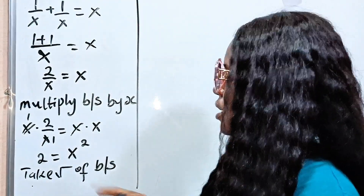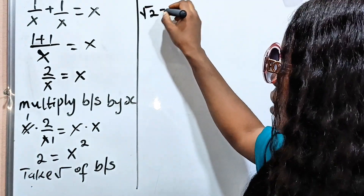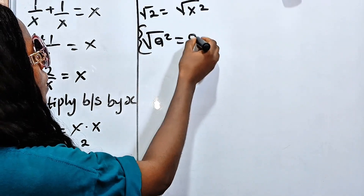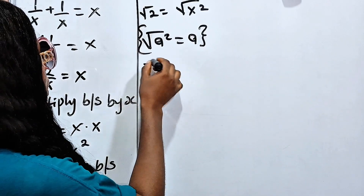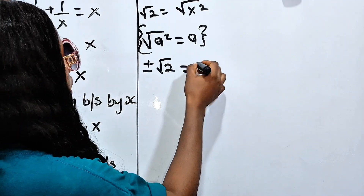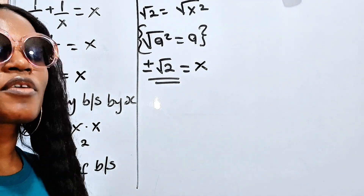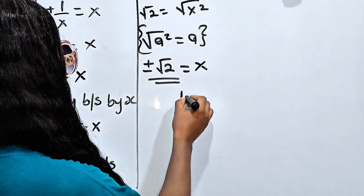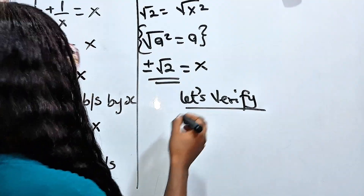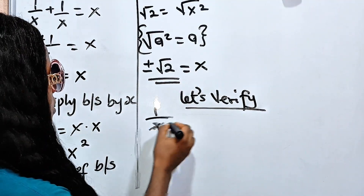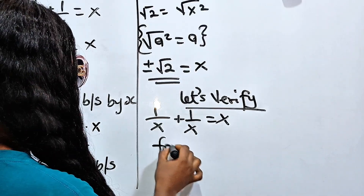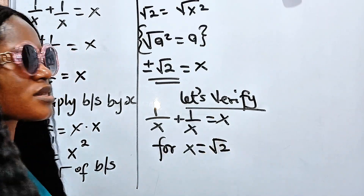So if we take the square root of both sides, we have square root of 2 is equal to square root of x squared. Remember that the square root of a squared is equal to a. So x equals plus or minus root 2. Now this becomes the value of x. Can we verify it? Because that is the only way we will actually believe the answer is true. For x equals plus root 2, let's start with the positive one.